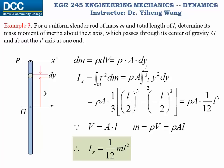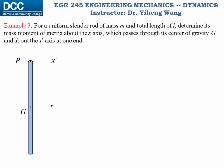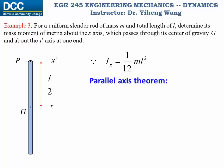For the second part of this problem, we already know I_x. The x and x-prime axes are parallel with a perpendicular distance of L/2. Applying the parallel axis theorem, we can determine I_x-prime to be one-third m·L².